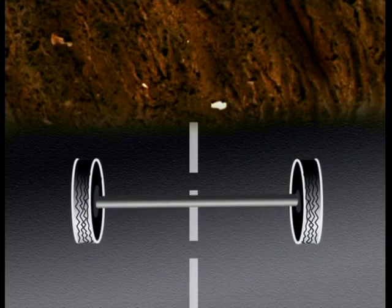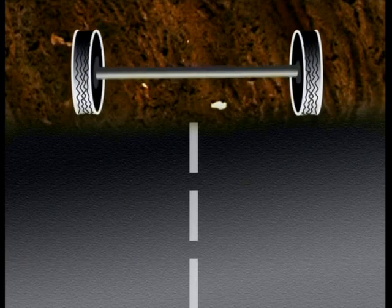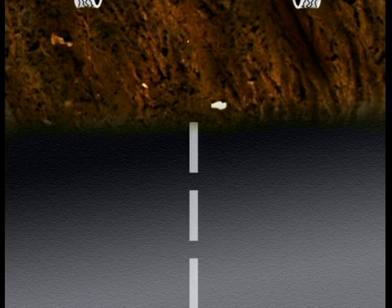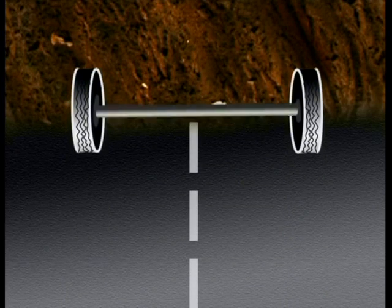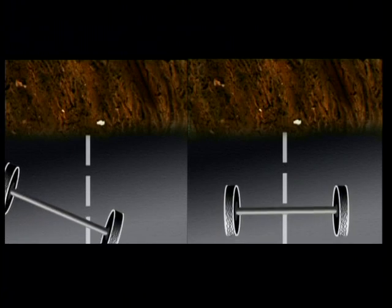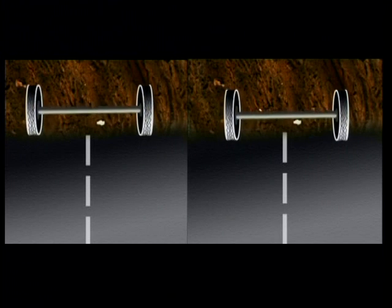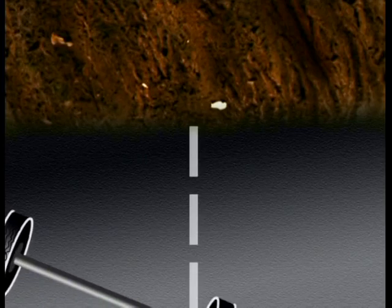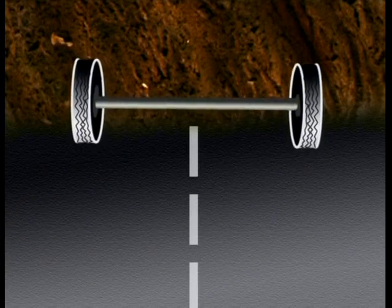Now, watch as the wheels move from the tar to the mud again. But this time, the wheels will move into the mud in a direction that is perpendicular to the boundary surface. The wheels didn't change direction — they simply slowed down because it is harder to move in the mud than on the tar. So comparing the two situations, we can see that for the wheels to actually change direction, they must move into the mud at an angle.